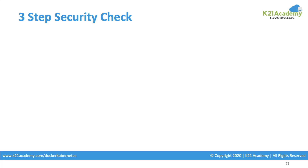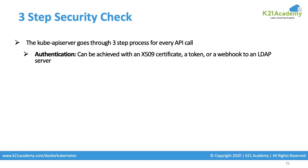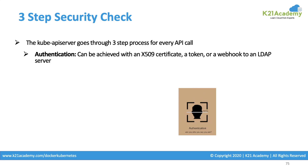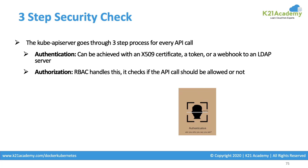The security check is done in three steps. The Kube API server, which picks up the commands we are executing, runs through a three-step process for all API calls. First, we are authenticated. Authentication is not built into Kubernetes — you can use any third-party authentication like LDAP, or if your cluster is running in Azure or AWS, you can use their IAM functionalities or Azure AD. You can authenticate the user onto the cluster using certificates, tokens, and passwords.